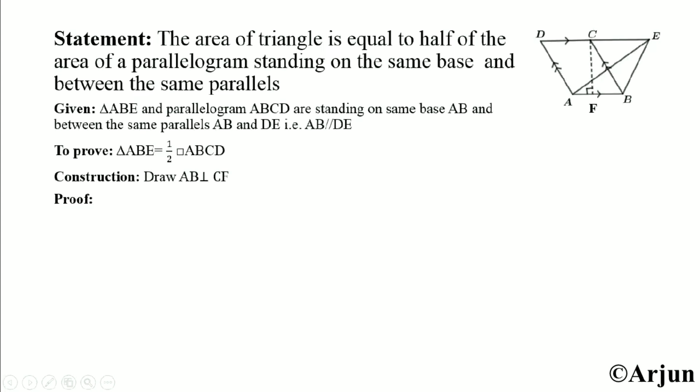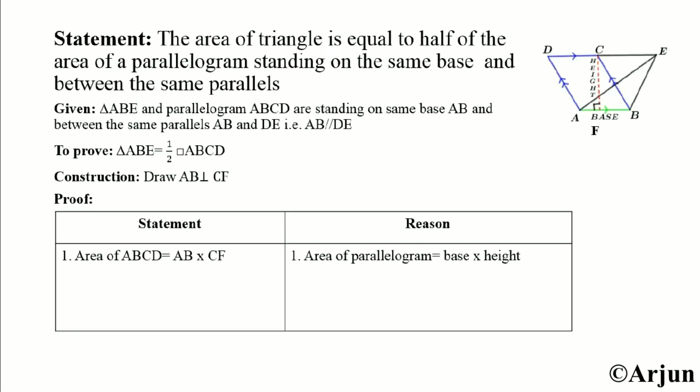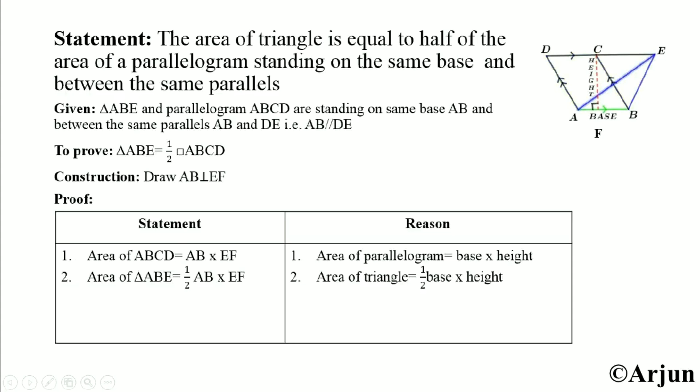Our proof starts here. We draw a two-column table with statement on one side and reason on the other. Statement one: area of parallelogram ABCD equals base into height, where base equals AB and height equals CF. So area of ABCD equals AB × CF. Reason: area of parallelogram equals base into height.